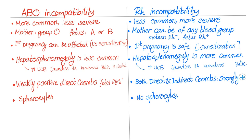Beware, however: ABO incompatibility is not protective if blood group O, RH positive red blood cells from the baby enter the maternal circulation. That's it for today.